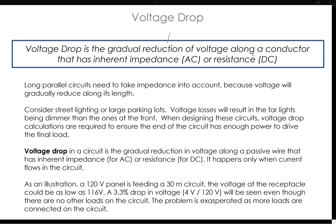Consider large parking lots, street lighting, or ballparks. These voltage losses — this voltage drop — is going to result in those lights that are really far away being dimmer than the ones at the front of that parking lot. So when you design these circuits, you need to calculate the necessary voltage drop and make sure that it's not too significant.